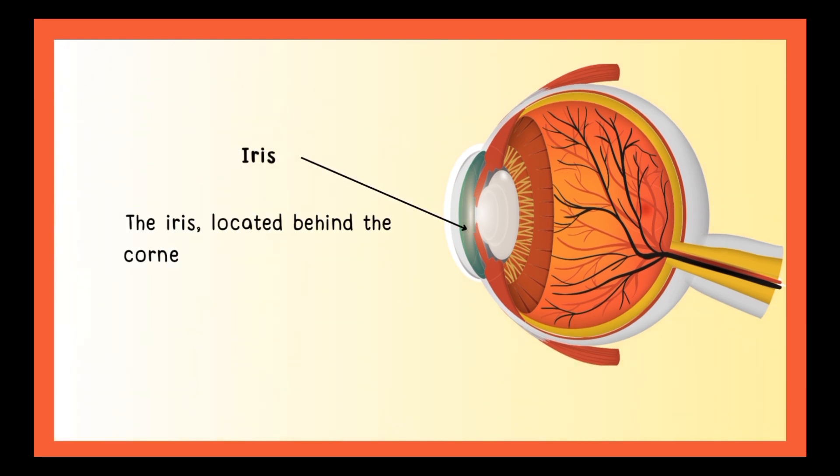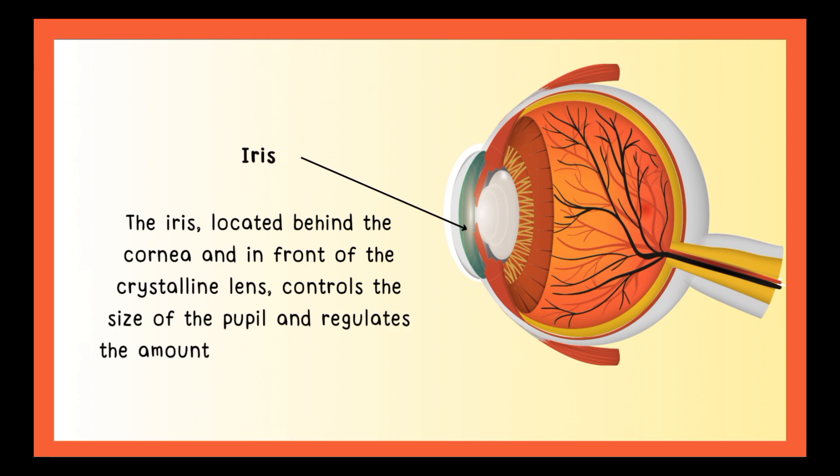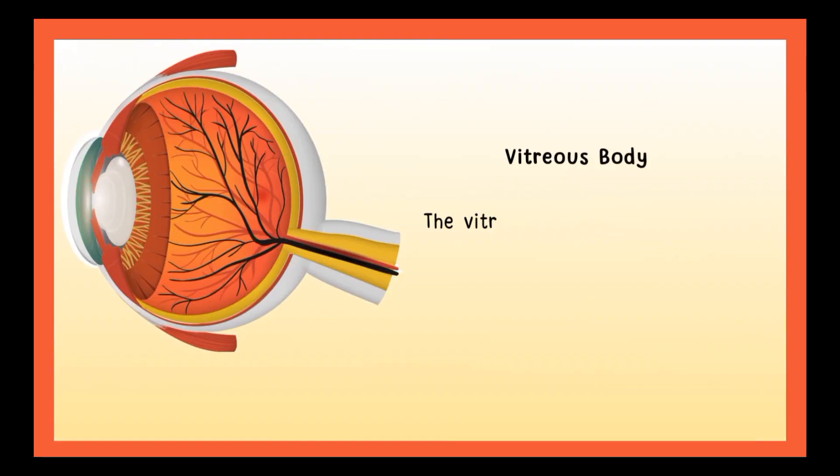The iris, located beneath the cornea and in front of the crystalline lens, controls the size of the pupil and regulates the amount of light entering the eye. The vitreous body is a gel-filled substance that protects the eye's parts from the lens to the retina.